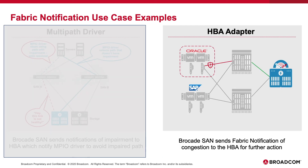The second use case example shown here is where the fabric identifies congestion and sends fabric notification to the devices involved or impacted. Then the HBA can take corrective action itself or forward that information to higher layers in the device. On a host, it is common that the HBA takes a corrective action itself, whereas for a storage device, the HBA would forward that information up to the storage controller, which can then make the decision to take a corrective action.